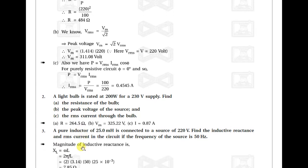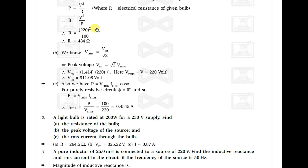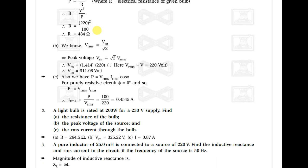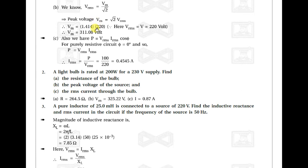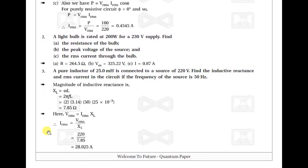Example number two: a light bulb is rated at 200 watt and 230 volt. Find the resistance of the bulb, the peak voltage of the source, and the RMS current through the bulb. Using P = V² / R for resistance, Vm = √2 × Vrms for peak voltage, and Irms = P / Vrms for current — you can find these values by yourself.